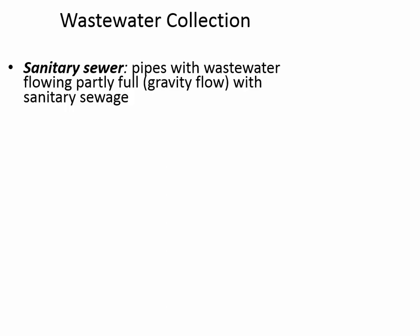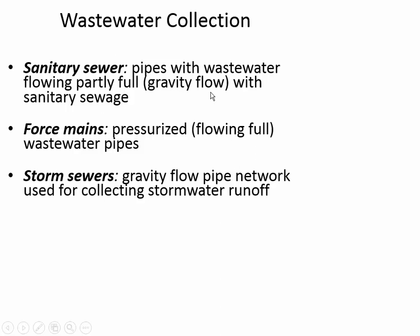Here are some technical definitions we'll use in the remainder of this chapter. A sanitary sewer carries domestic waste and flows partly full under gravity — it's not a pressurized pipe. Force mains, on the other hand, carry sewage but are pressurized. Big pumps force water uphill or when the sewer gets too deep.